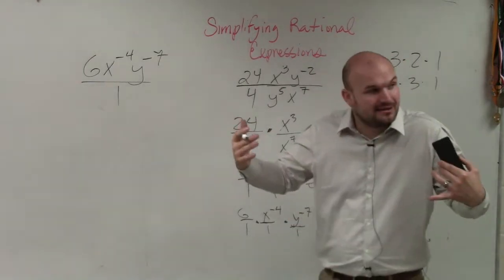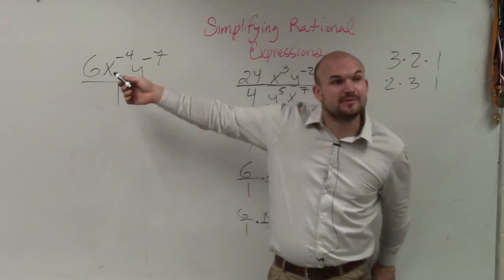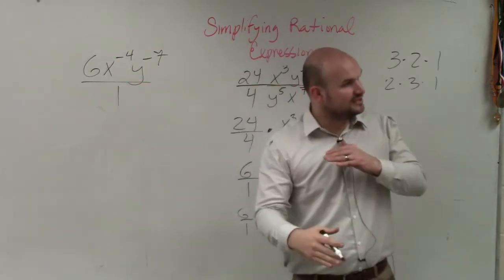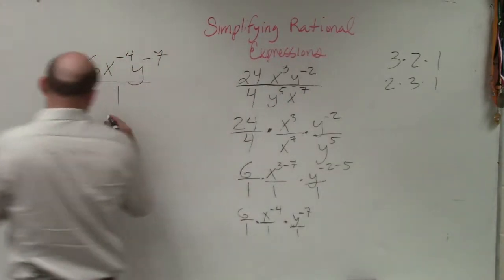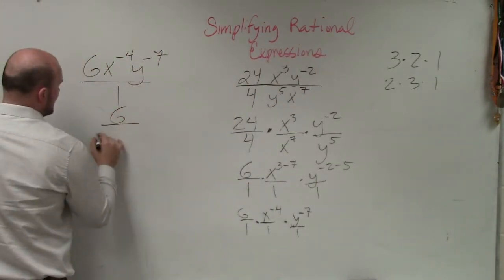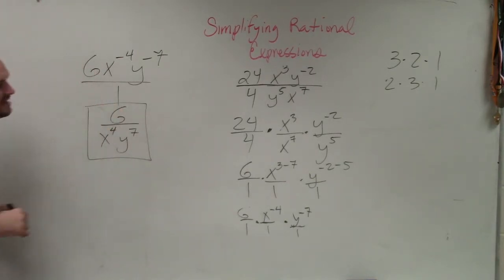But here's the important thing. Can we write them with negative powers? No. If we're writing them with negative powers, they have to be in the denominator. So if they're in the numerator and they're negative, they now have to be in the denominator. So my final answer is 6 divided by x to the 4th y to the 7th.